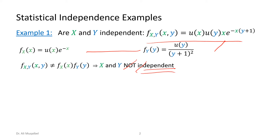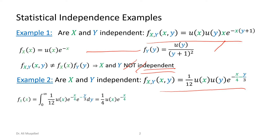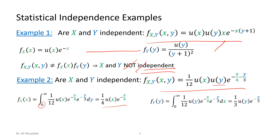The second example asks: are X and Y independent given this joint PDF? Here the variables are separable, so finding the marginals is easy. We find the marginal PDF of X by integrating over all possible values of Y, starting from zero because of the unit step u(y). By symmetry, the marginal PDF of Y follows similarly, just with different constants. We can then verify that multiplying the two marginals recovers the joint PDF — so X and Y are independent.